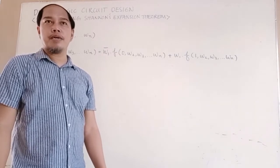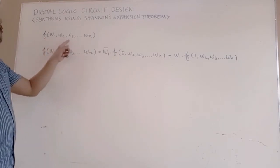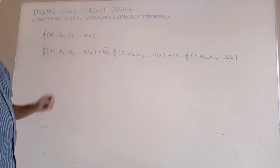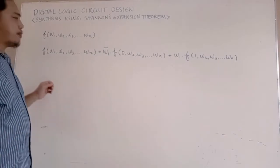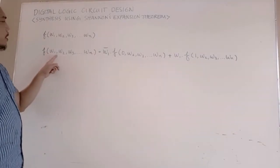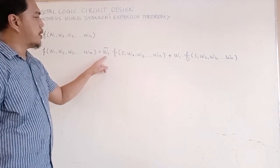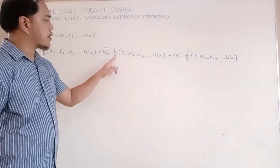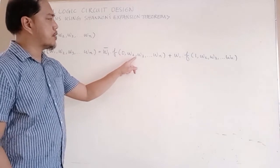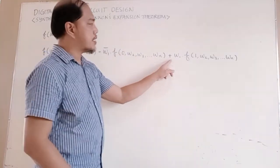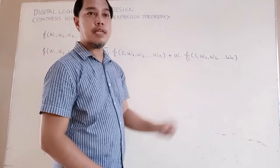Any Boolean function F with input variables W1, W2, W3 up to WN can be written as a multiplexer. This can be written in the form: F(W1, W2, W3, ..., WN) equals W1-not AND its co-factor F(0, W2, W3, ..., WN) plus W1 AND co-factor F(1, W2, W3, ..., WN).